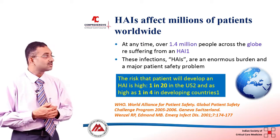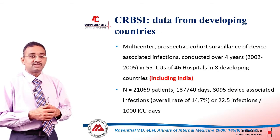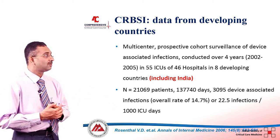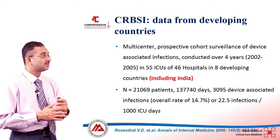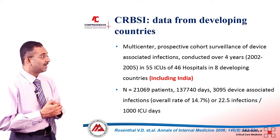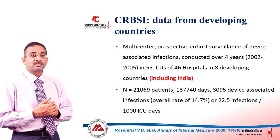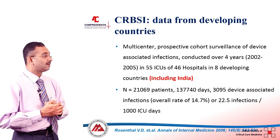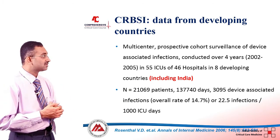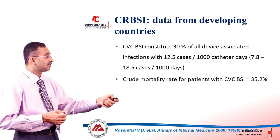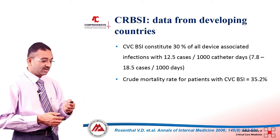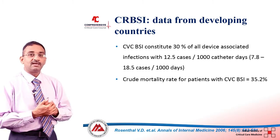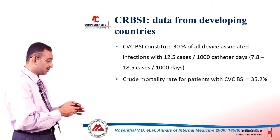Hence it becomes very important for us to prevent these infections. How about the incidence in our country? This is from the Rosenthal study in 2006, where they looked at almost 55 ICUs in 46 hospitals in developing countries including India. They looked at almost 21,000 patients and found an overall incidence rate of 15% for catheter-related bloodstream infection, with a mortality rate of around 35%, which is very high.